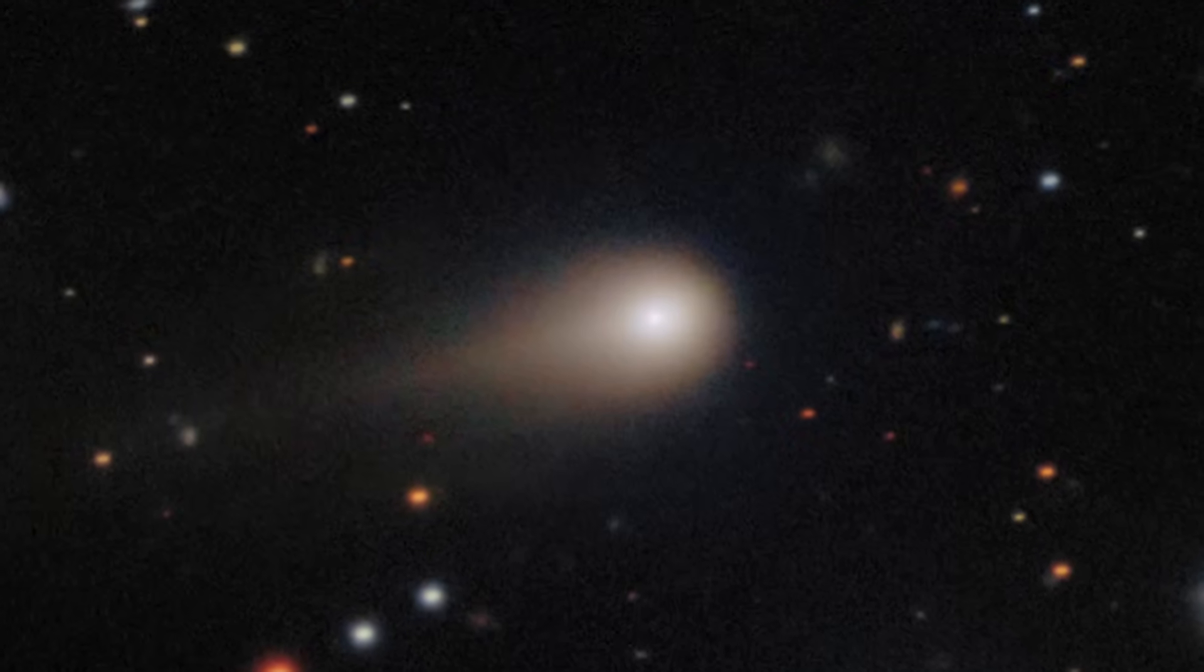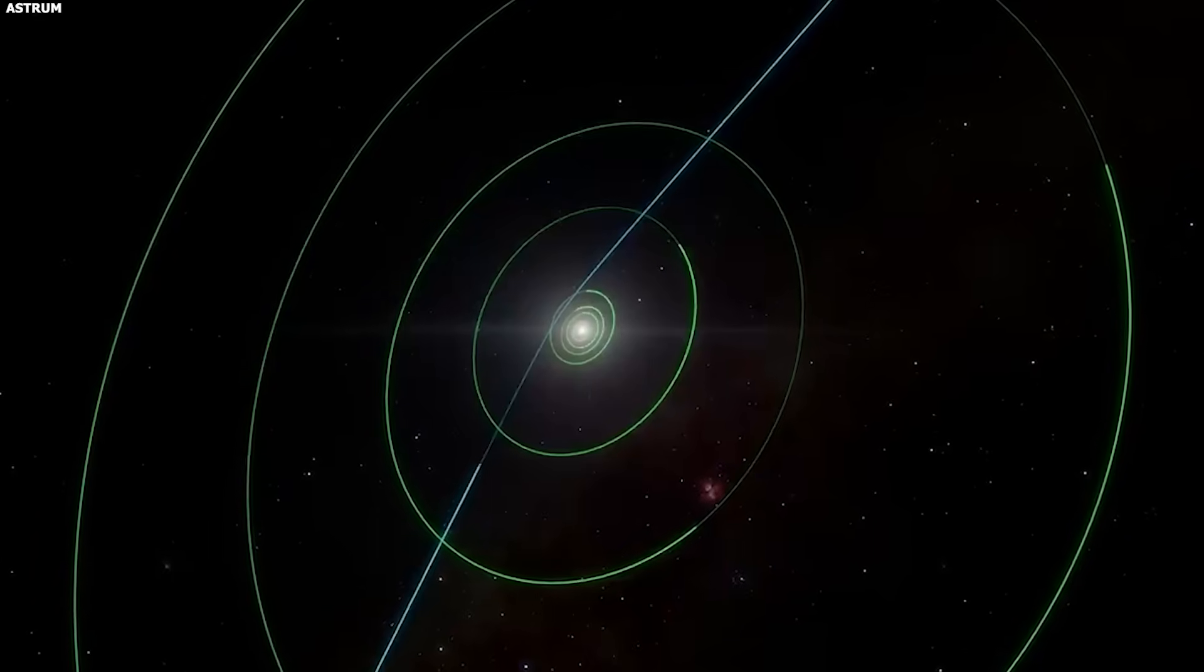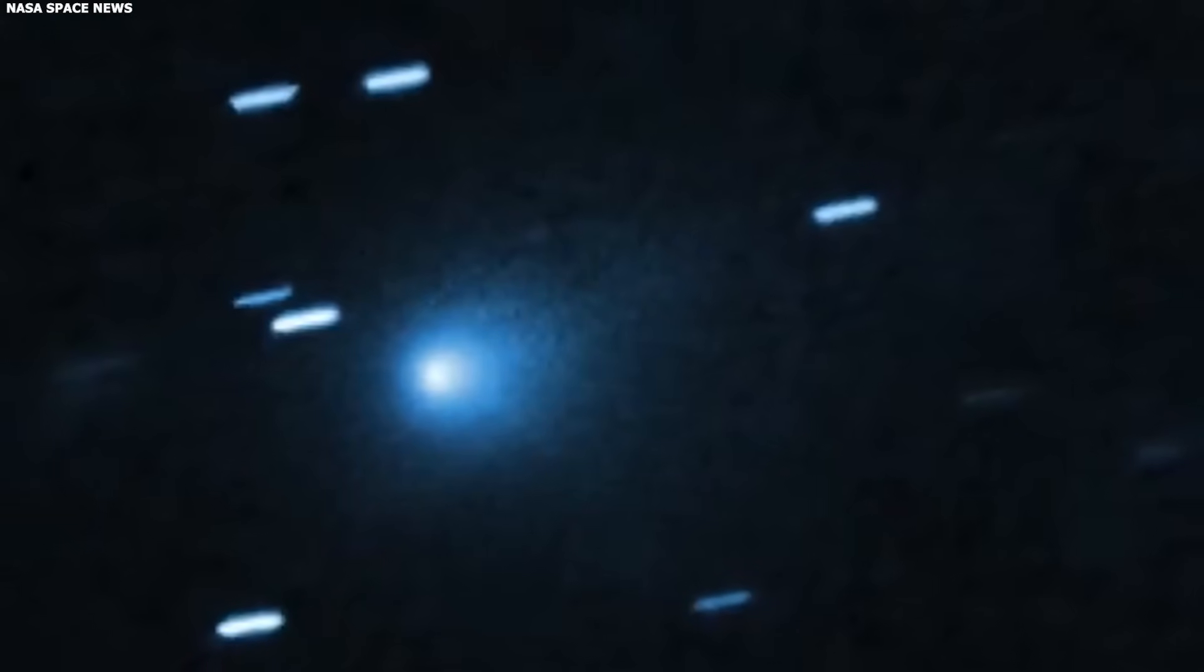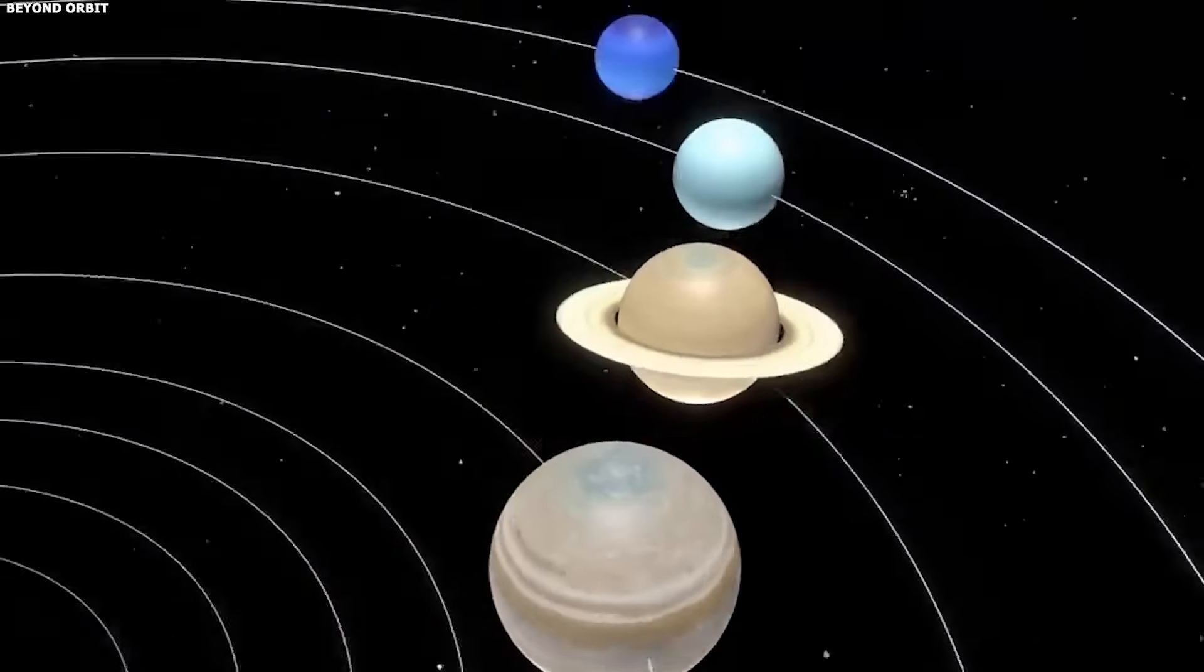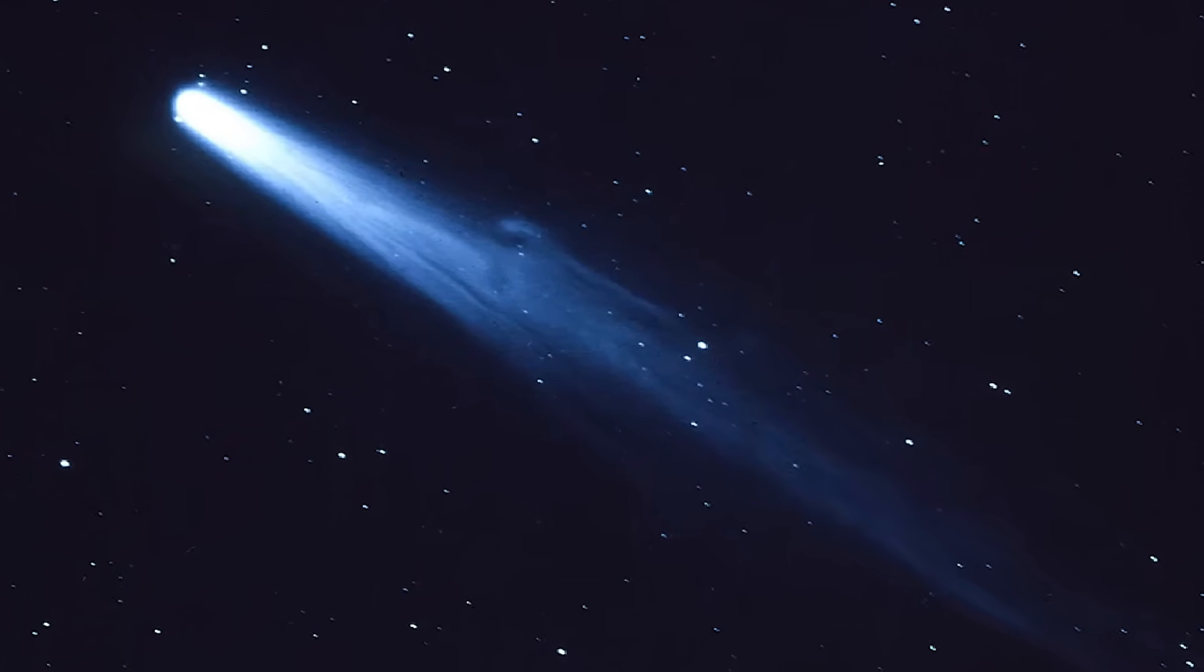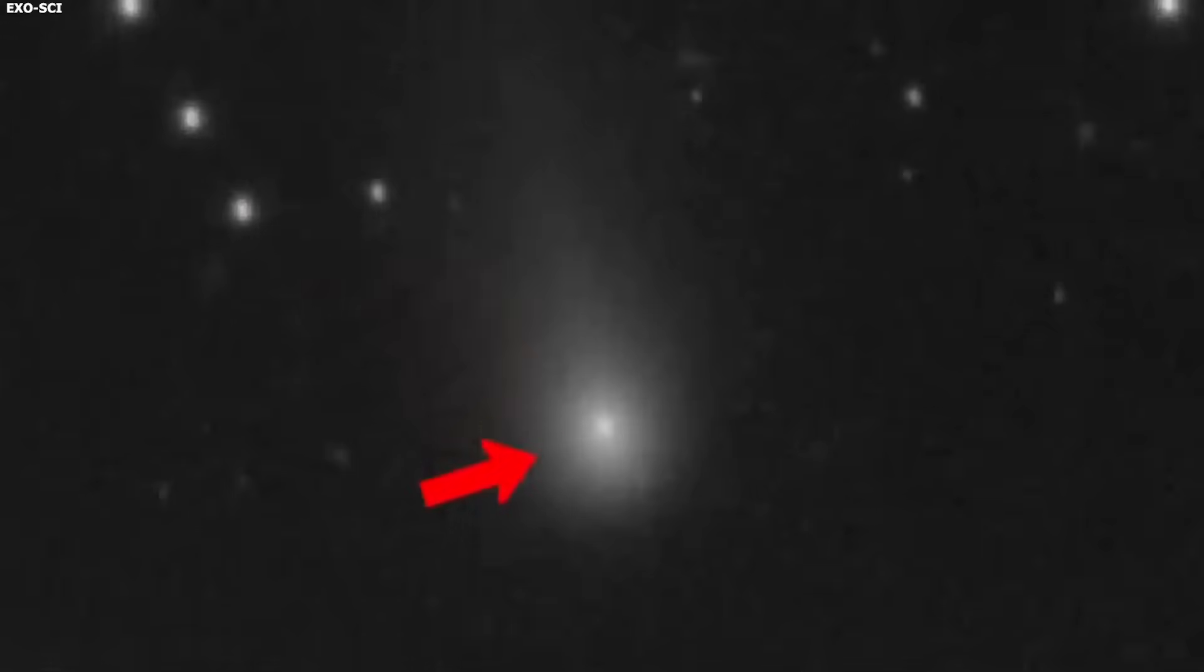The physics problem. The anti-tail extends 60,000 kilometers toward the sun. That's a massive structure. And it's made of gas and dust. The same stuff that should be getting blown away from the sun. To create a tail pointing sunward, you need particles moving against the solar wind. That means you need a force pushing them in the opposite direction. A force stronger than solar radiation pressure and solar wind combined. But what force? Gravity pulls things toward the sun. But gravity affects the whole comet equally. It doesn't create a jet or a tail. And 3I Atlas is moving on a hyperbolic orbit. It's going fast enough that the sun's gravity only bends its path slightly. Gravity isn't creating this anti-tail.